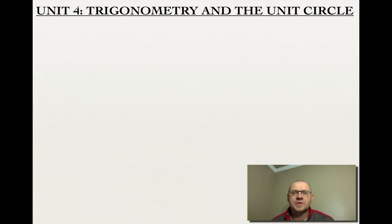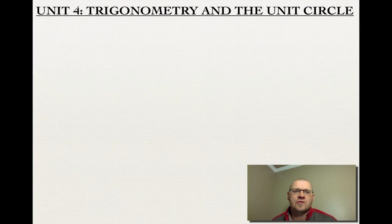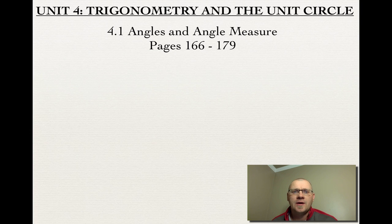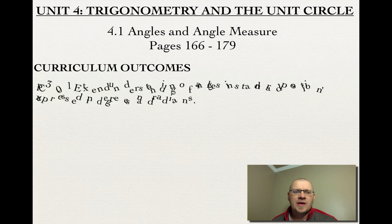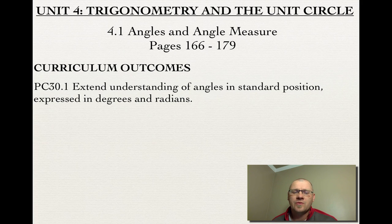Alright, we're starting Unit 4, which is Trigonometry and the Unit Circle. Our first topic is 4.1, where we're talking about angles and angle measure. Pages 166 to 179 in your textbook. Our curriculum outcome is 30.1, where we're going to extend our understanding of angles in standard position, expressed in degrees and radians.